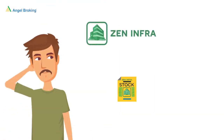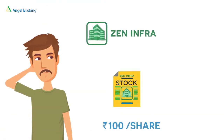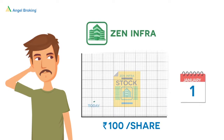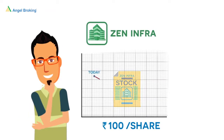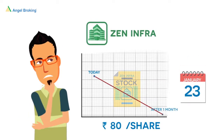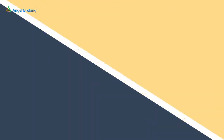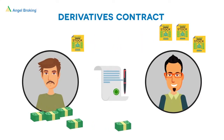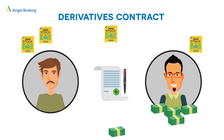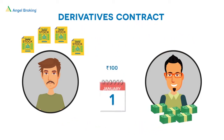Let's say Rajat feels the shares of Zen Infra, currently priced at Rs. 100, is set to rise considerably in one month. However, Ahmed, who owns some shares of Zen Infra, is expecting the price to fall. So, Rajat and Ahmed enter into a contract by which Rajat has to buy and Ahmed has to sell the Zen Infra shares at an agreed price of Rs. 110 after 30 days, irrespective of the market price.